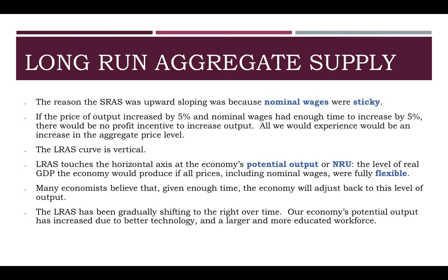The long-run aggregate supply curve is analogous to the production possibilities curve. Over time, since we've started here with the economy, the potential for the economy has slowly been shifting to the right — our potential has been increasing. Reasons: better technology — we're able to do things better and faster — and our workforce is becoming more educated. So our potential changes, but the idea is the same: we always want to be working at our potential.